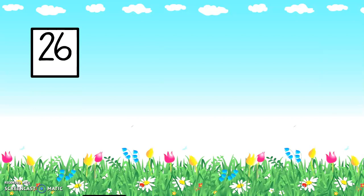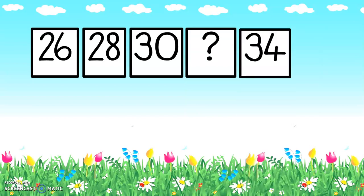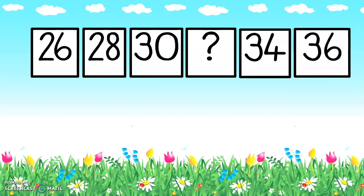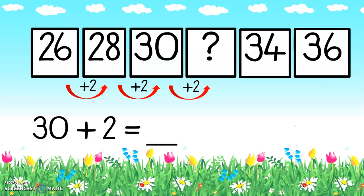Let's do the next one: twenty-six, twenty-eight, thirty — there is a question mark. What does that mean? It carries on — thirty-four, thirty-six. Let's count again: twenty-six, twenty-eight, thirty — I don't know what that number is — thirty-four, thirty-six. But I know! Let's work out the number pattern. Twenty-six, twenty-eight — what did I have to add to get that number? I plused two. So twenty-six plus two gives me twenty-eight. Twenty-eight plus two gives me thirty. So thirty plus two gives me what? Let's count: thirty, thirty-one, thirty-two. The answer is thirty-two.